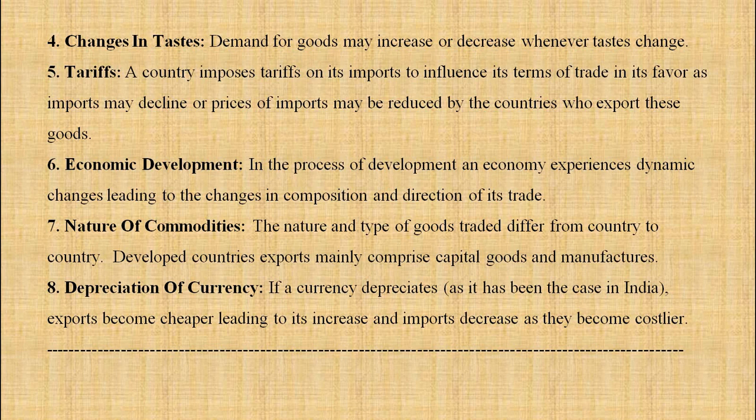Sixth, economic development: in the process of development, an economy experiences dynamic changes leading to changes in the composition and direction of its trade. Seventh, nature of commodities: the nature and types of goods traded differ from country to country. Developed countries' exports mainly comprise capital goods and manufactures. Eighth, depreciation of currency: if a currency depreciates, exports become cheaper leading to an increase in exports, and imports decrease as they become costlier.